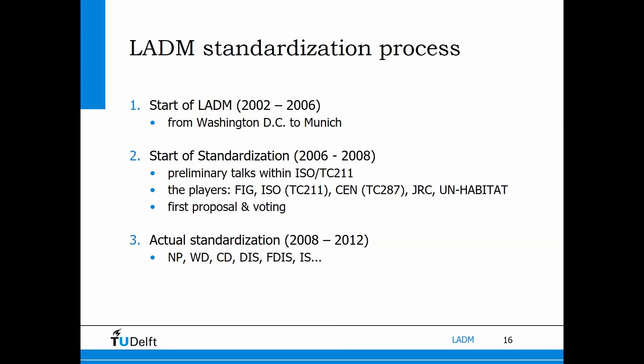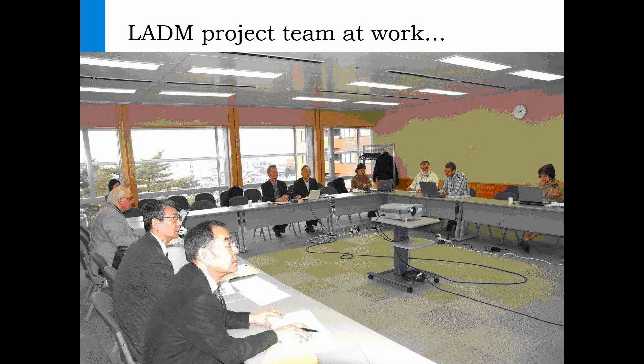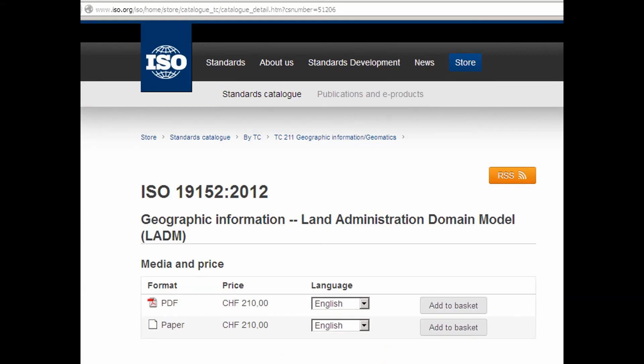The process was rather lengthy. First, within FIG it took four years to develop the first model, the domain model. Then there were a number of preliminary talks within ISO among the players — FIG, the European Normalization Institute — and the actual standardization started in 2008. After a number of phases, in 2012 it became an official standard. Here we see the LADM project team of ISO TC 211 at work in one of the meetings, and here is the result. You can go to the ISO website and download — after buying — this standard.